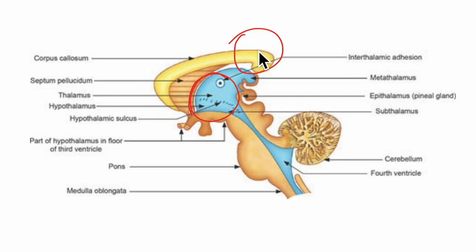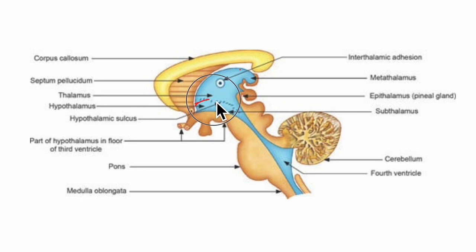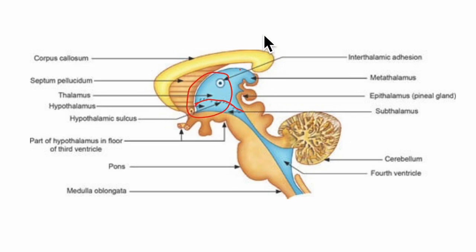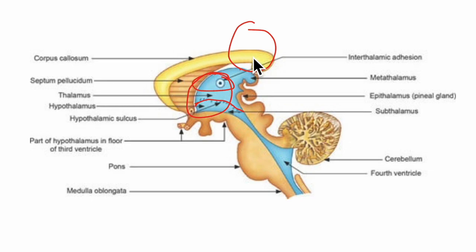These are the left and right parts of the diencephalon. There is a hypothalamic sulcus that extends from the interventricular foramen to the cerebral aqueduct, and it divides each half of the diencephalon — that is the left half and the right half — into dorsal and ventral parts.